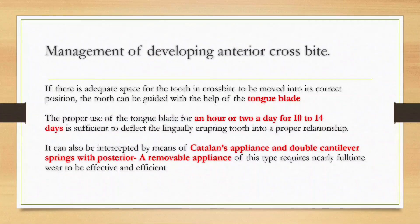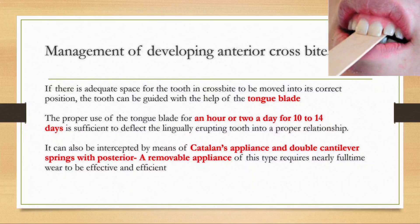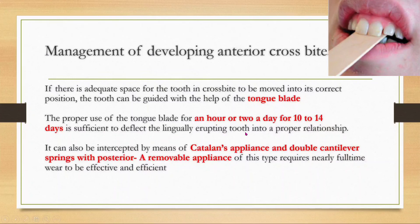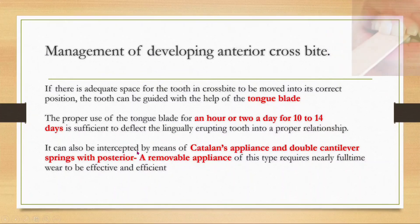For management of anterior crossbite, if there is adequate space for the tooth to be moved into the correct position, a tongue blade can be used for one to two hours per day for 10 to 14 days to deflect the lingually erupting tooth into proper relationship. It can also be intercepted using Catalan's appliance or a double cantilever spring with a posterior removable appliance.